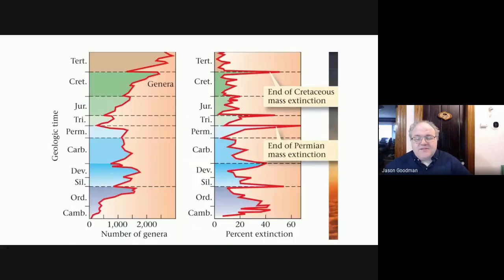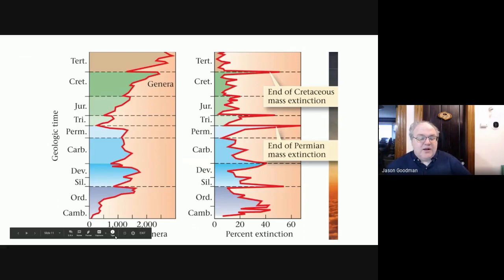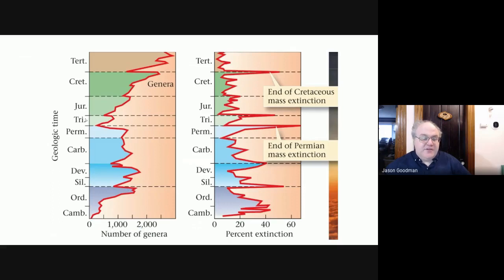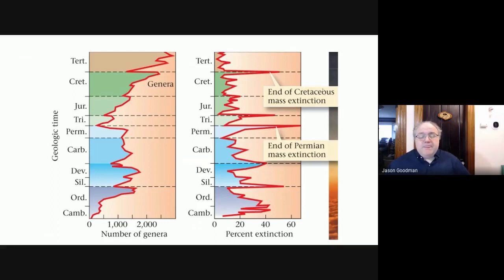Another way of viewing this is not by looking at families, which are large categories of organisms, but genera, which are much smaller categories. Here you see starting at the Cambrian explosion: diversification of life, a dieback, diversification, dieback, dieback, a big dieback here which is the focus of our efforts. And here between Cret and Tert is the end of the dinosaurs.